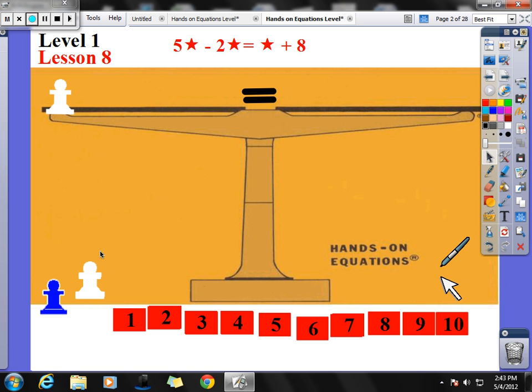So we're doing 5 star. So I'm going to take 1, 2, 3, 4, 5 star minus 2 stars. I take 2 stars off. Equals star plus 8. Now I subtract exactly like I've been doing. I have 3 stars on this side. I have 1 star on this side. I can take away 1 star or subtract 1 star from both sides. Now that leaves me with 2 star equals 8. Divide by your coefficient, which is 2. Divide both sides by 2. That leaves me with star equals 4.